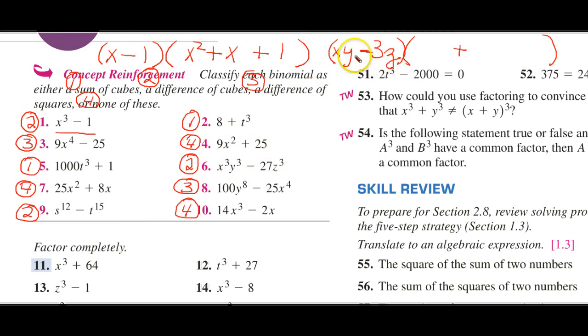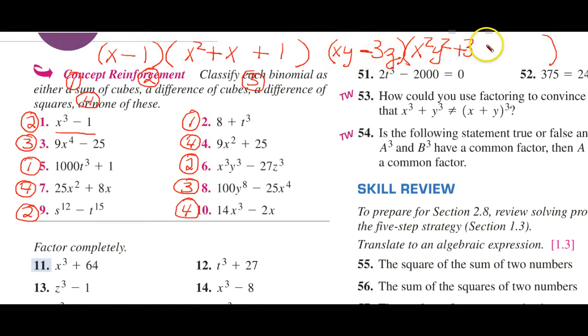And then now we complete the recipe by squaring this term, multiplying these two together. And we get 3xyz. And now we square this term. And we get a positive 9z squared.